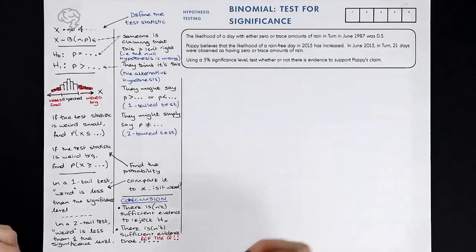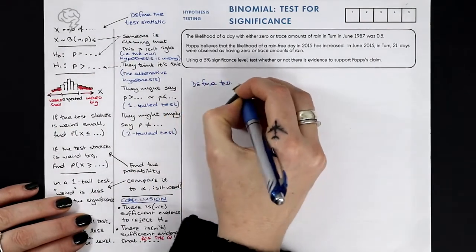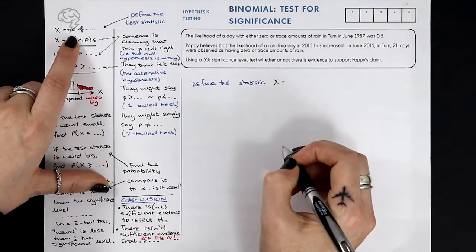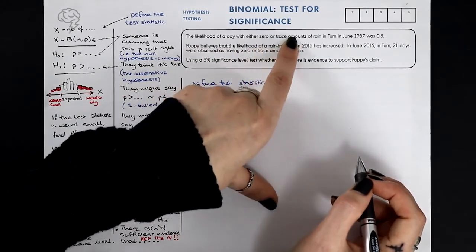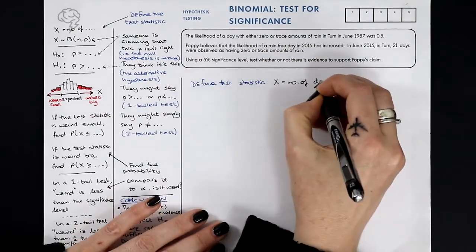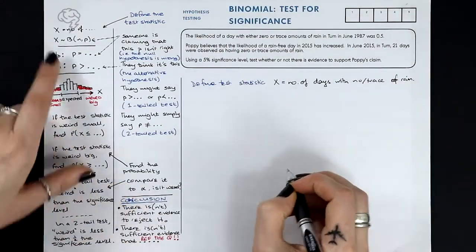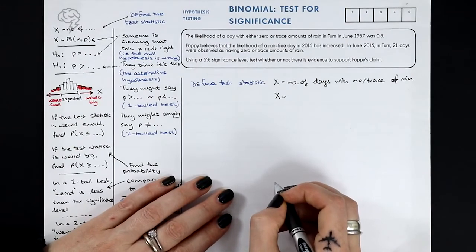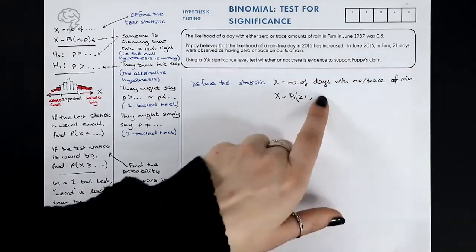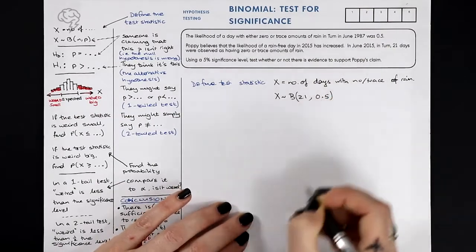Let's have a go at this actual question. We start by defining the test statistic — we need to know what X is. So X is the number of days with zero or trace amounts of rain. How is it distributed? Well, each day either does or does not have this amount of rain, so it's a binomial distribution. We've got 21 days and the probability — assuming nothing has changed — is 0.5, so every day has a 50/50 chance of no rain.